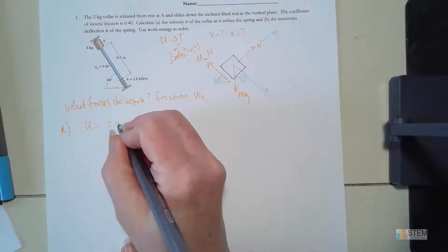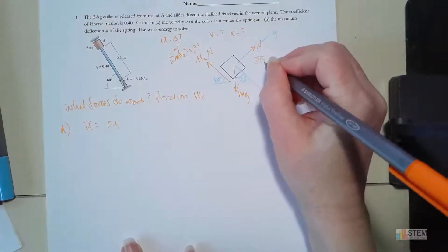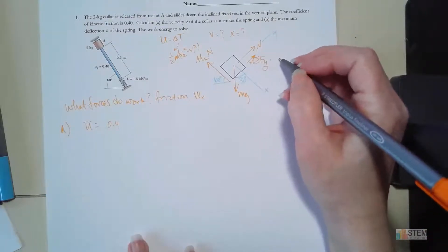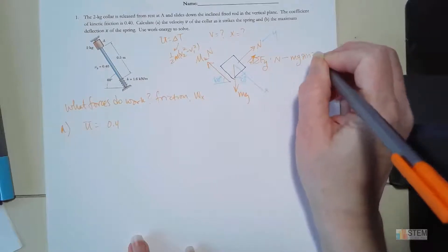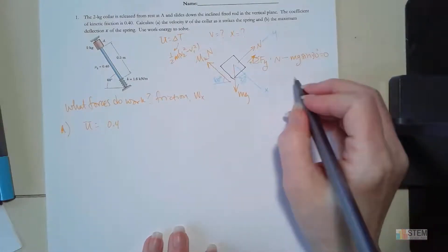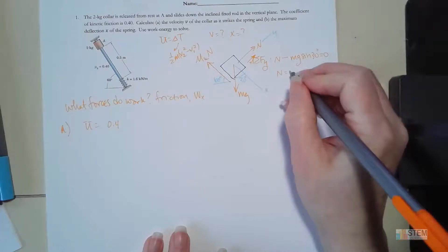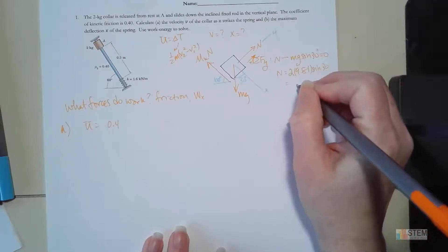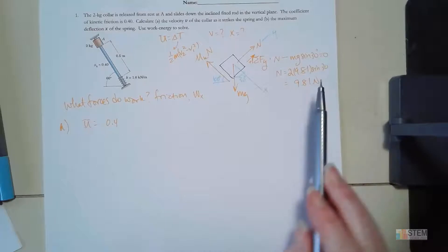For friction, I need to find N. Looking at the sum of forces in the Y direction: N minus the Y component of weight, which is mg sine 30, equals zero — because there's no acceleration along the Y axis. Solving, N equals weight times sine 30. Plugging in numbers: 2 times 9.81 times sine 30, which gives N equals 9.81 newtons.